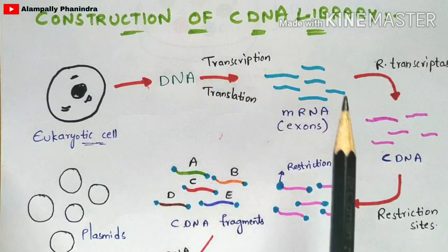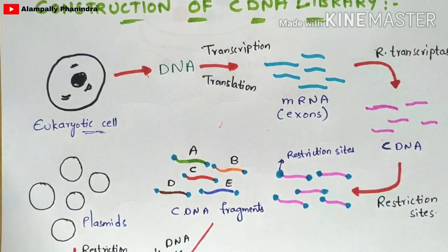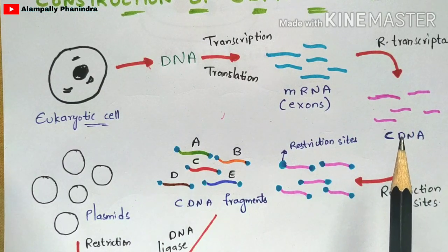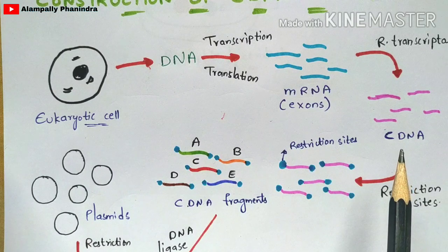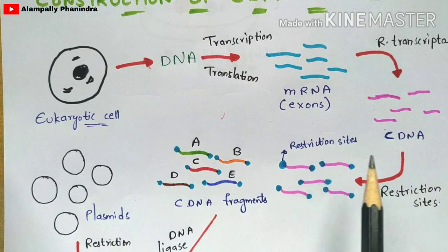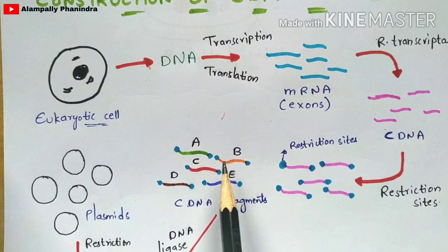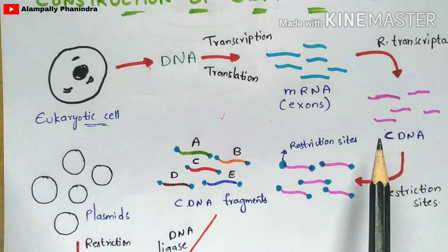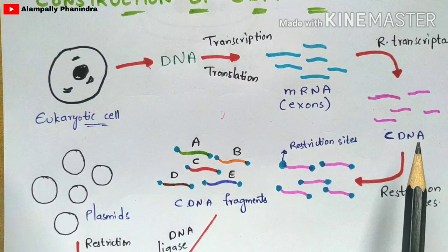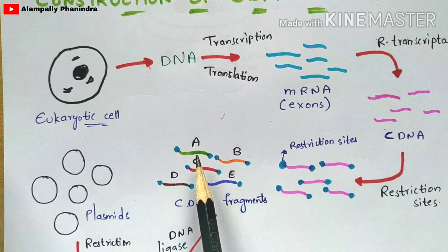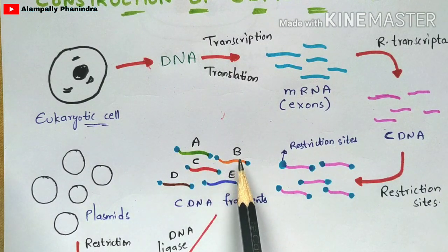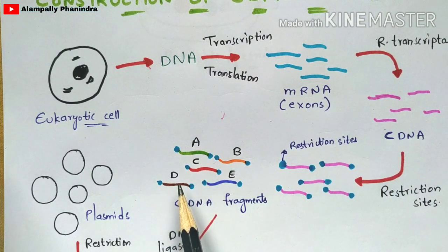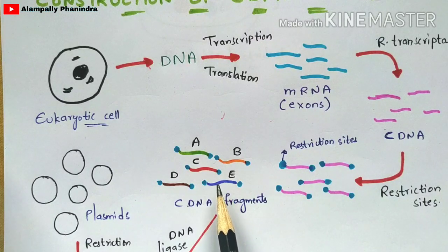Now, how do you construct the cDNA library using these cDNA strands? To the cDNA, you add restriction sites — shown in blue — at the end parts of the cDNA. These are the cDNA fragments with restriction sites. Different colors represent different types of cDNA formed from different mRNAs: green, orange, red, brown, and dark blue — five different cDNA fragments in total.